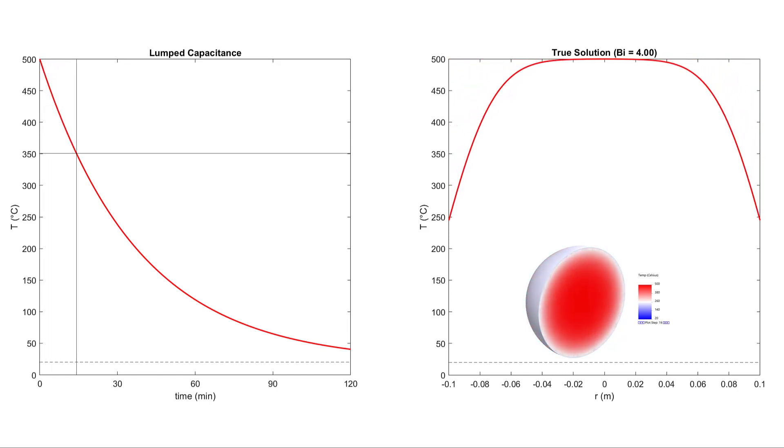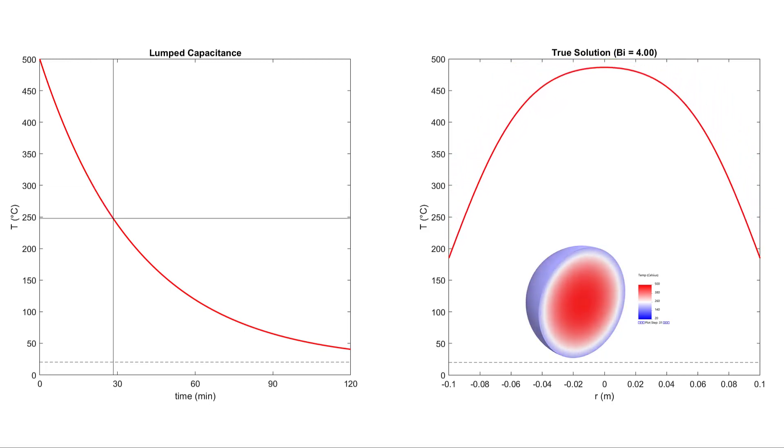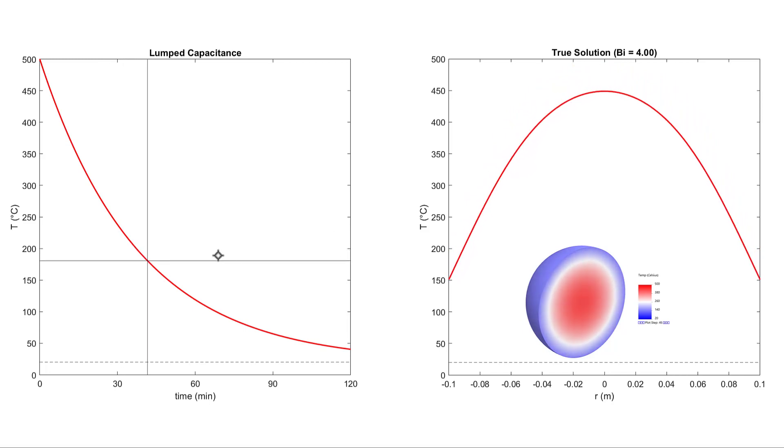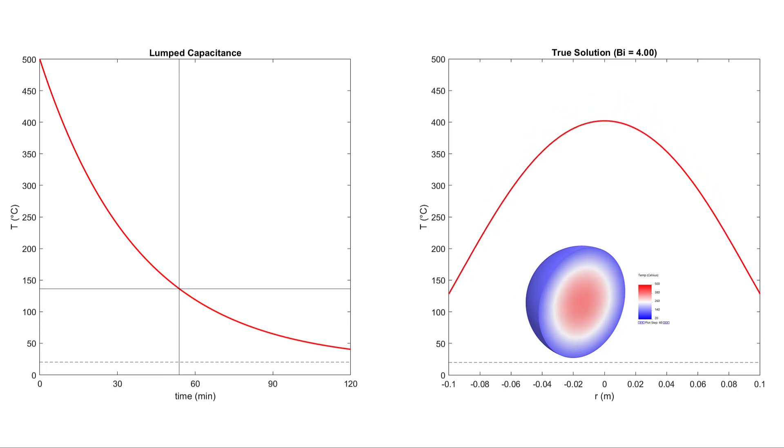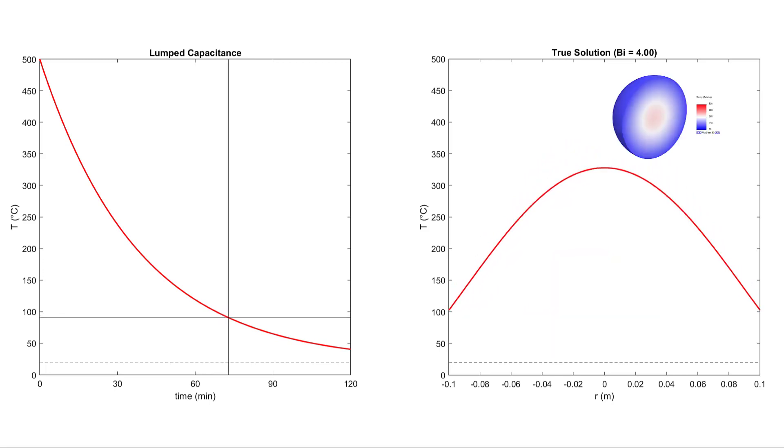What we see is a large reduction in temperature of the exterior of the sphere. It takes a while before the interior of the sphere even begins to change temperature. Another thing to take a look at is compare the temperature that we would predict from lumped capacitance to that of the true solution. The true solution shows a temperature much greater than what we would predict with lumped capacitance. And in fact, over a long period of time, lumped capacitance predicts a temperature that's below that of any location within the true solution.